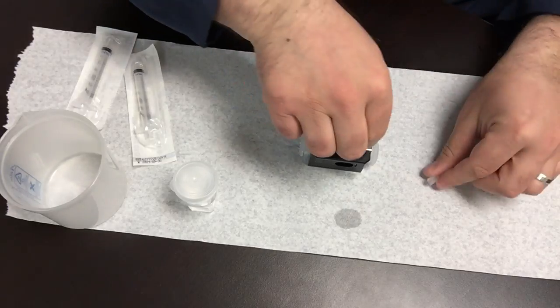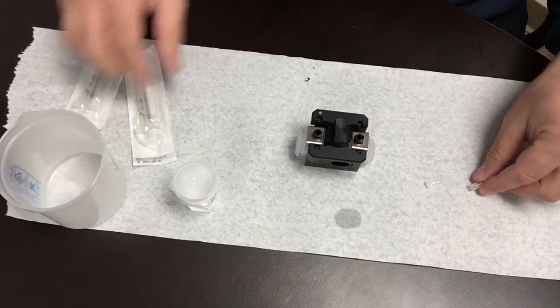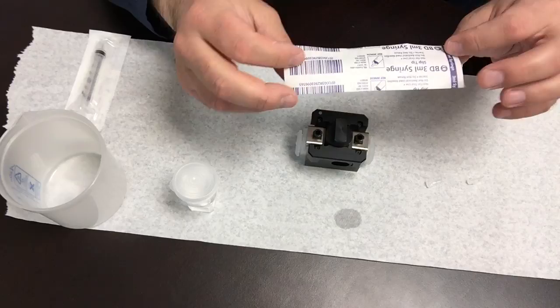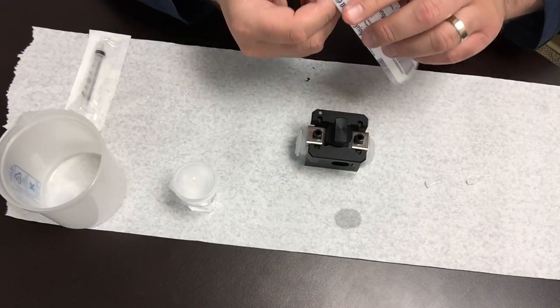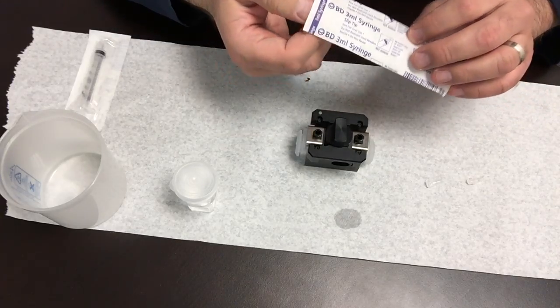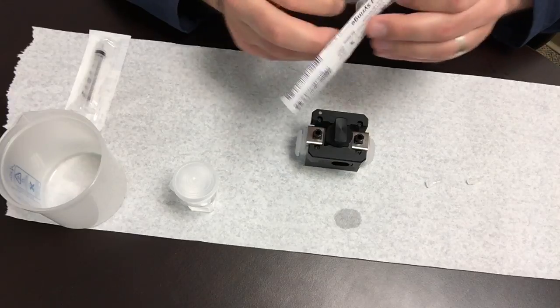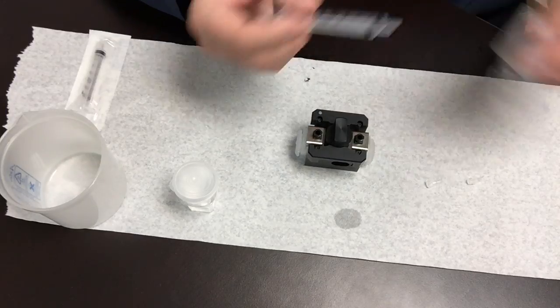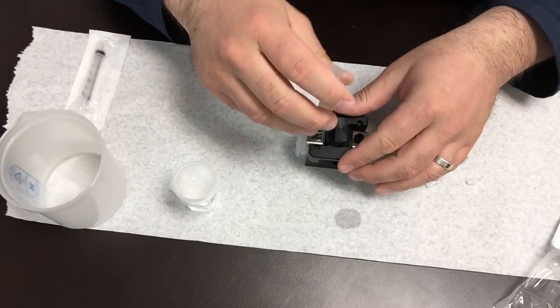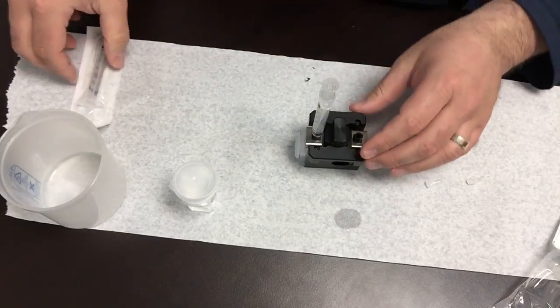You take the caps off. Take a syringe. You can use a one milliliter syringe, three milliliter or five. I like to use probably about three. You place the empty one here on one side.